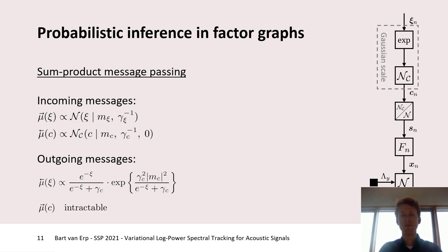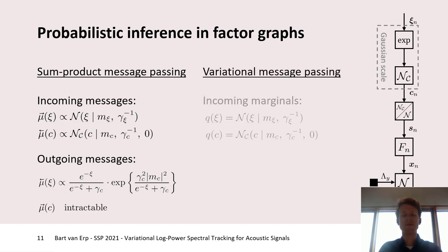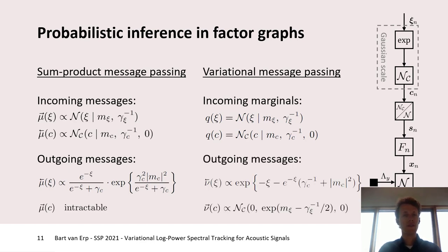Because the message mu of c is intractable, we need to resort to variational message passing. We can assume that incoming marginals q(psi) and q(c) are given, similarly to the incoming messages of the sum-product algorithm. Using these incoming marginals, we can calculate the outgoing messages. The message towards psi has an uncommon shape, while the message towards c, which was first intractable, is now of the shape of a complex normal distribution.